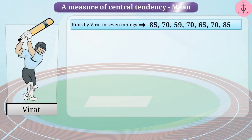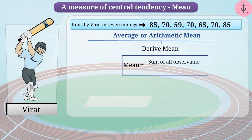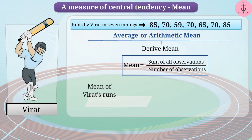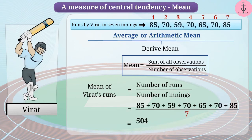In general terms, mean is referred to as average. It is also referred to as arithmetic mean. To derive mean, you need to divide the sum of all observations by the number of observations. For deriving mean for Virat's innings, we will need to add up the number of runs provided in the data and then divide it by the number of innings for which the data is provided. 504 divided by 7 is equal to 72.